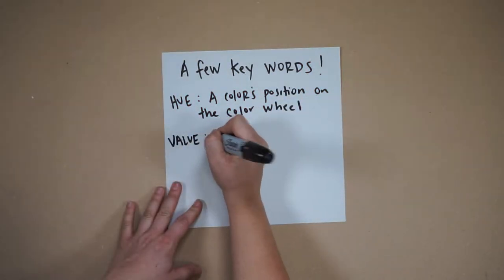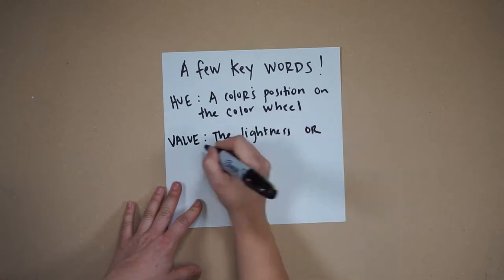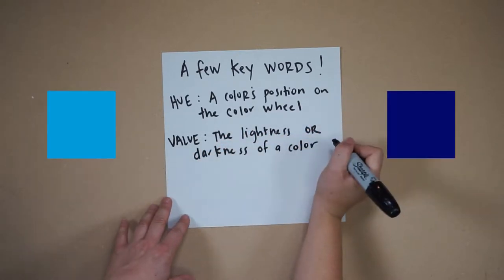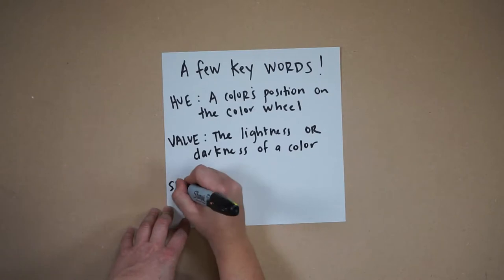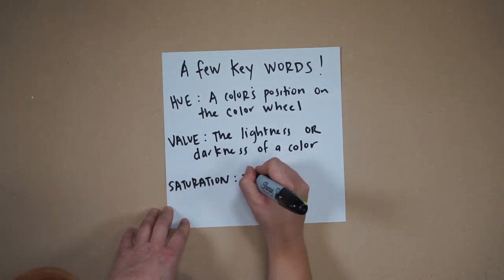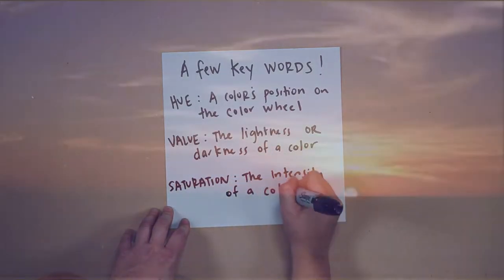Value is the lightness and darkness of a color. Think light blue or dark blue. And saturation is the intensity of a color. A sunset can have many saturated colors.